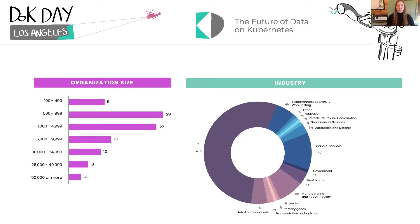For company size, we spoke with a mix of folks. The largest segment was enterprise at 60% or more — those are folks with 5,000 or more employees — then mid-market at 30%, and small business at 10%. Almost half came from technology organizations, which we define as those making software, hardware, services, or a mix. Then 12% came from financial services, 8% from manufacturing and heavy industry, and 6% from telco.